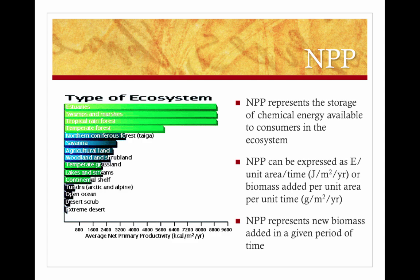After the autotrophs use some of the energy to sustain their own life and for things like growth and reproduction, what's left and stored is available to the organisms who eat it. It can be expressed as energy per unit area per time — joules per meter squared per year — or as biomass, the dry mass of vegetation added per unit area per unit time, in grams per meter squared per year.